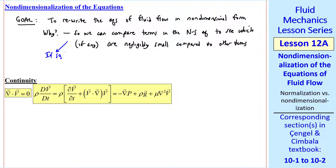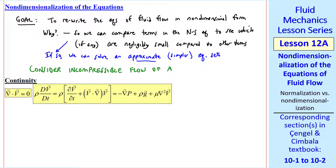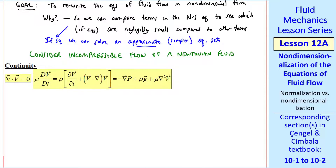If we can neglect some terms, we can solve an approximate, simpler equation set. Here we'll consider only incompressible flow of a Newtonian fluid.